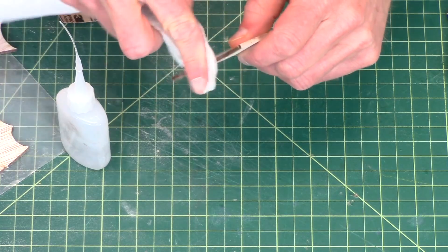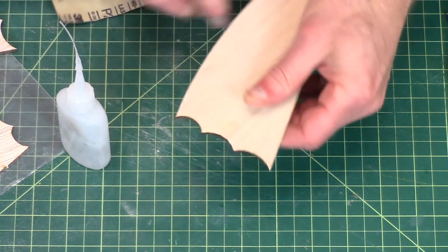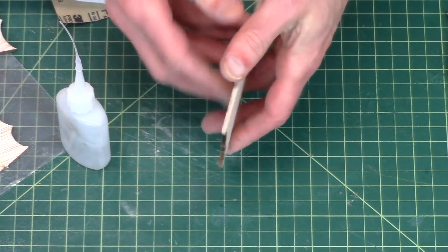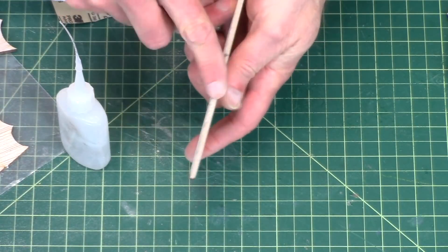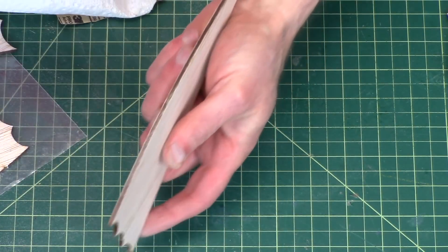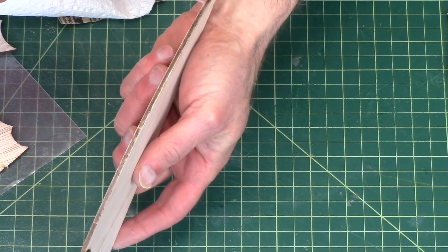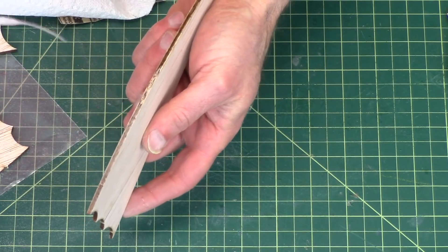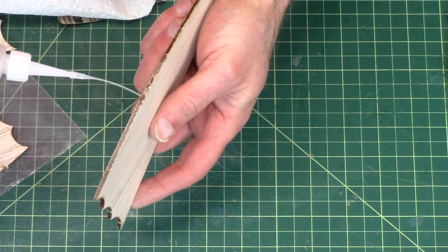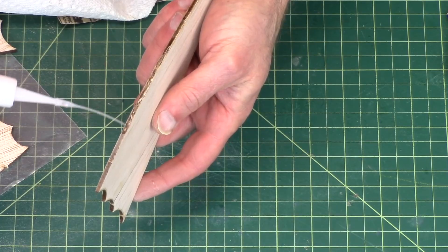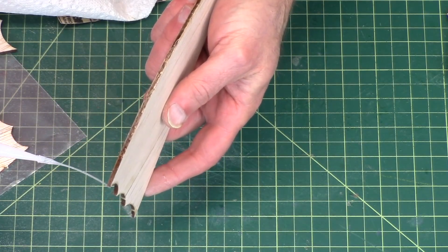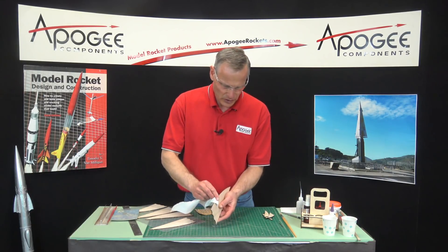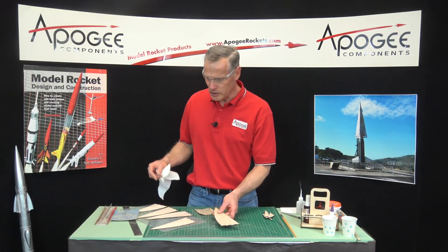What I want to do is just go around the edges and this just seals the edges of the balsa wood because that's the end grain. It's going to soak into the wood pretty quick. I'm not going to do the root edge but I will do the outside edge. The reason I don't do the root edge is if you want to use wood glue to glue it to the rocket, once you put this on the wood glue doesn't penetrate the fibers of the wood anymore.